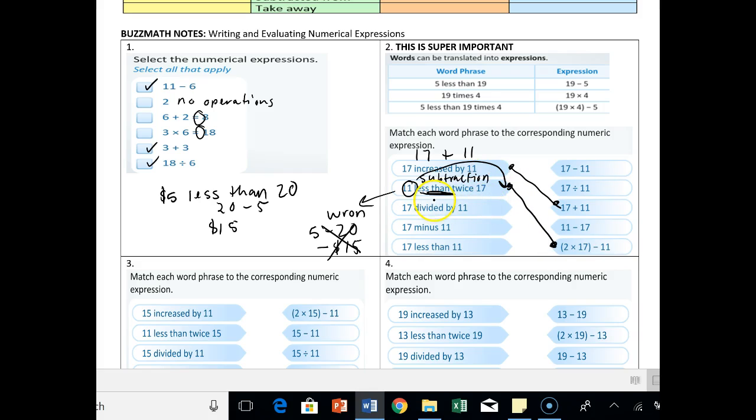17 divided by 11, that's easy. Obviously, divided by is a division sign, so that matches up with the second one. 17 minus 11, that one stays in order. 17 minus 11. That stays directly in order, so that's the first one.